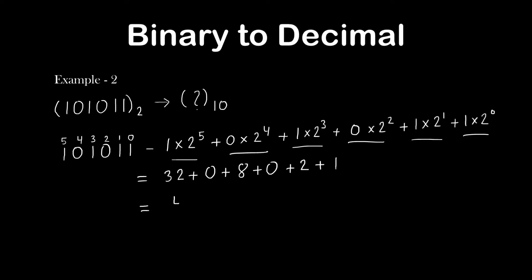After adding the products, we got the result 43, which is the decimal form of the given binary number 101011.